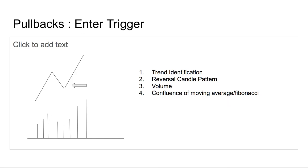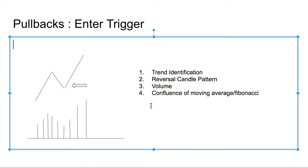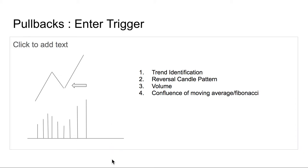Key things to look at when trading a pullback: first is trend identification. One of the easiest ways is looking at moving averages — whether it's a 20-day, 50-day, or 100-day, depending on your time frame. You can look at the chart from left to right and see which direction price is moving. If the moving average is trending upside, expect upside continuation; if trending downside, the same applies.